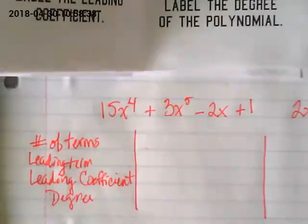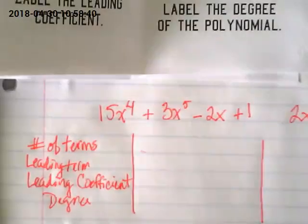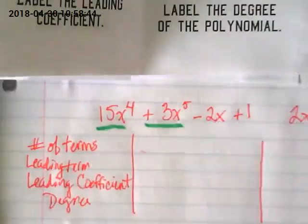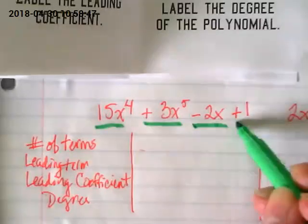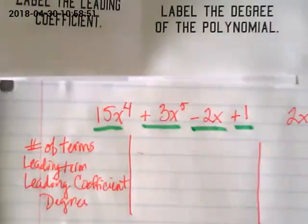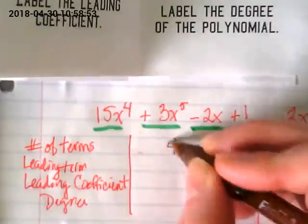We're going to put number of terms in our first polynomial. There's 1, 2, 3, and 4. So, down here, we're going to say how many terms there are. There are 4. 4 terms.